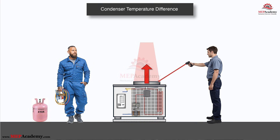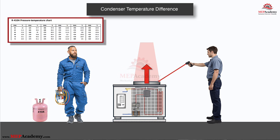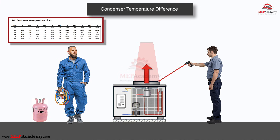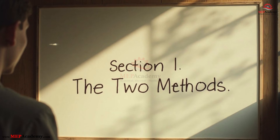Two techs walk up to the same condenser. One pulls out an infrared gun and shoots the air coming out the top. The other hooks up gauges and looks at a pressure chart. They walk away with completely different stories about what's wrong with the unit, and only one of them is right. Today we're settling the argument once and for all: air temperature rise versus real condenser temperature difference — which one actually tells you what's wrong?